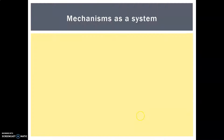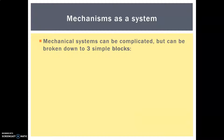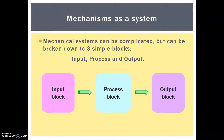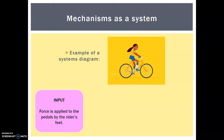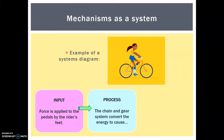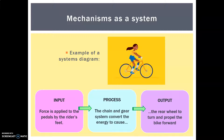Let's have a look at mechanisms as systems. Mechanical systems can be quite complicated, but if we break them down into three simple blocks we make it easy: input, process, and output — just like this, shown in a block diagram. Here we have a young lady riding a bike. For the input, she's applying force to the pedals. The process is that energy being converted by the chain and gear system to the rear wheel, which propels her forward.